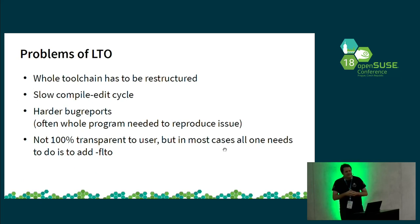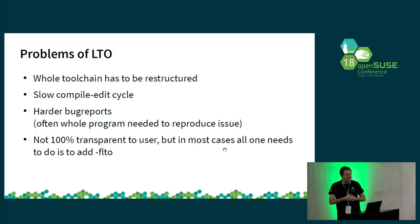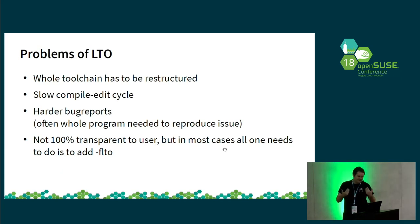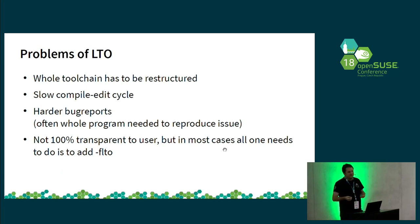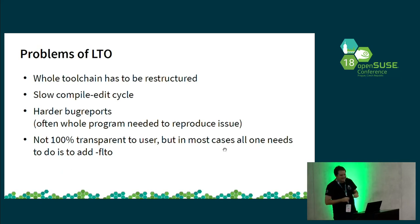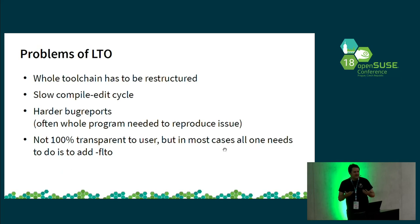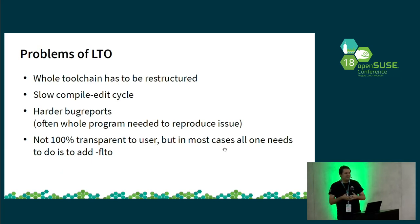There are also problems. One is that you need to change the whole toolchain. Another is that compilers are much slower than linkers because they do much more work. Each time you change a single file, you have to redo all the compilation work, which takes a lot of time. Bug reports also become harder, because if your program doesn't work, you can't just take the single object file and source code and send it to Bugzilla. You basically get bug reports like 'Linux kernel is broken if I compile this version with this version of GCC, and I don't know how to reduce it further.' Also, it's not completely transparent to users — most of the time you can add LTO to your command line and it works, but it doesn't work in complex scenarios like the Linux kernel.